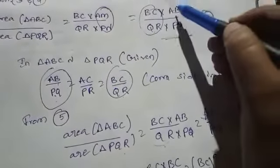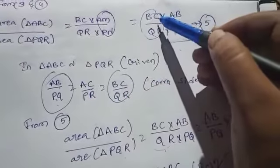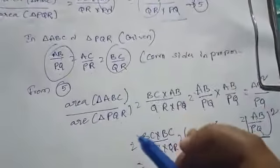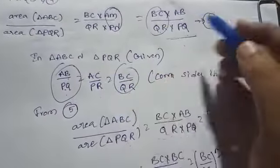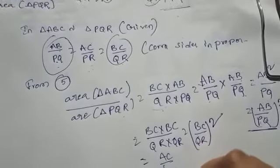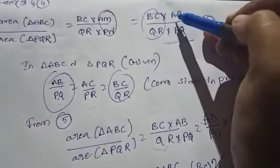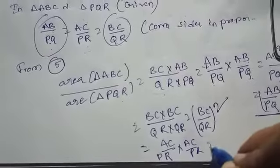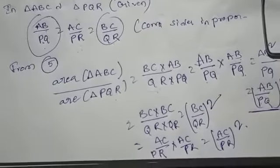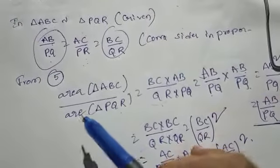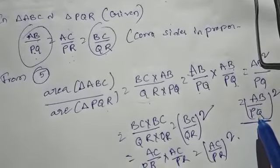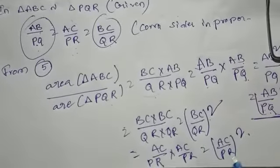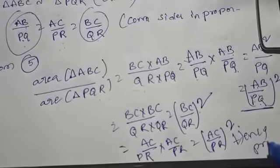Therefore, area of triangle ABC by area of triangle PQR equals AB by PQ all square, which equals BC by QR all square, which equals AC by PR all square. Hence proved.